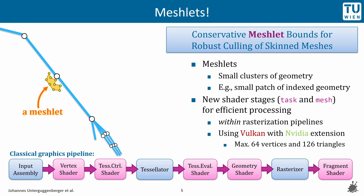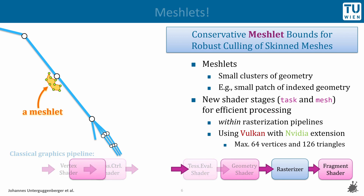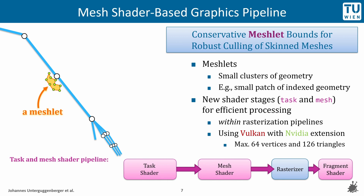In contrast to classical pipelines, only the rasterizer stage remains as a fixed function stage. All geometry processing shader stages are replaced by the new task and mesh shader stages. They enable efficient processing of multiple meshlets in parallel. Entire meshlets can be culled very early in such a pipeline, namely in task shaders, so that unnecessary computations are avoided in later shader stages.